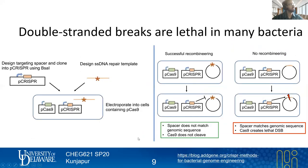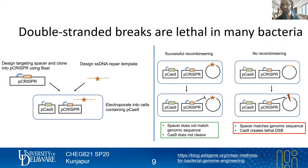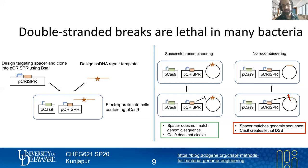CRISPR-Cas9 has had a big impact across all kinds of eukaryotes — mammals, zebrafish, worms, and many other platforms of biological relevance. But in bacteria, while there were many ways to do genome engineering in certain organisms, one of the difficulties with using Cas9 is that it creates a double-stranded break. You can engineer it to just bind and not cut, but that's not very useful. You can also engineer it to make just a nick of one strand of double-stranded DNA rather than both — that version is called a nickase.